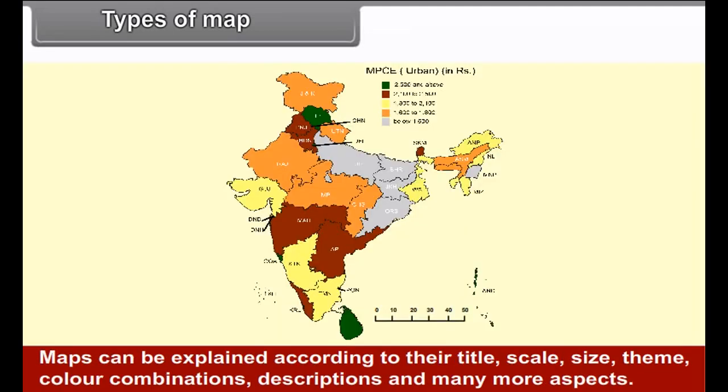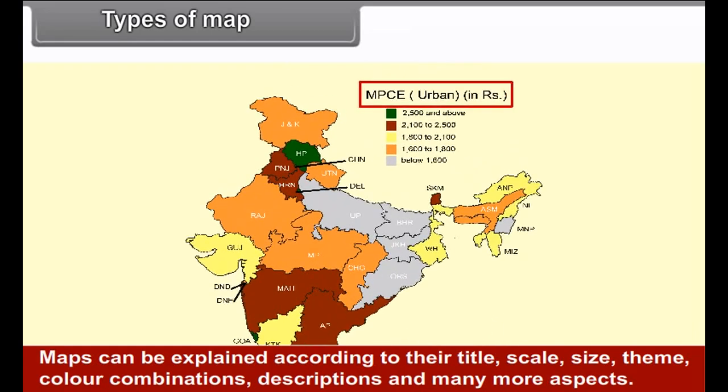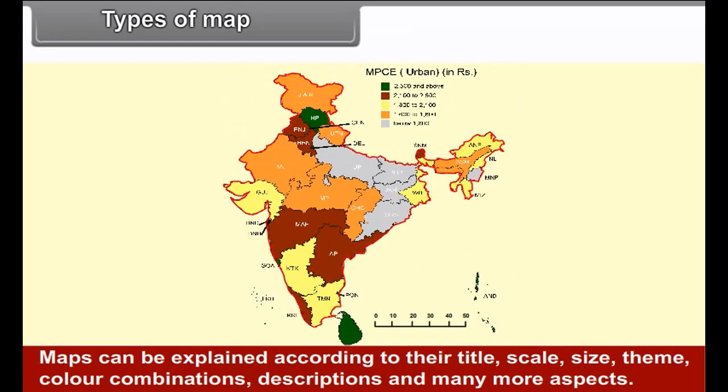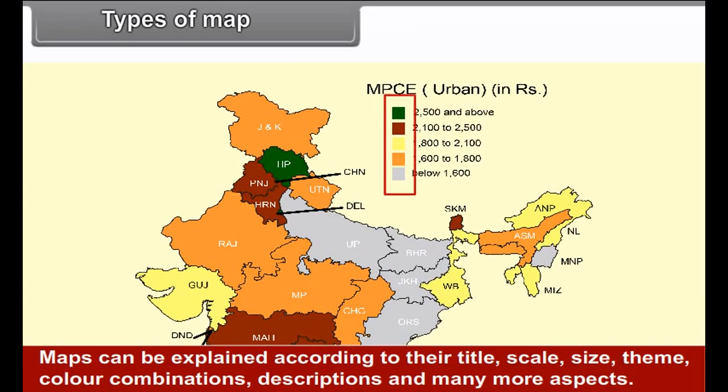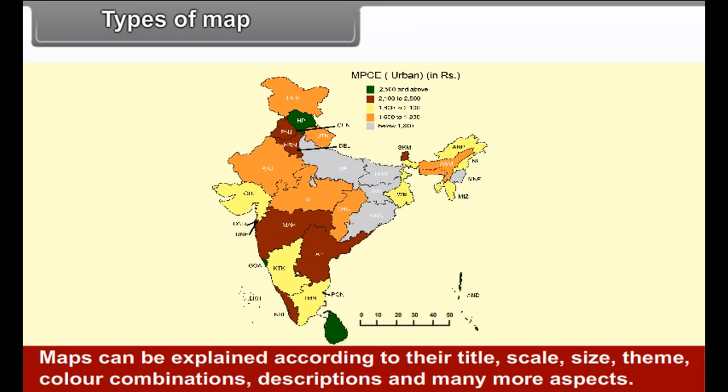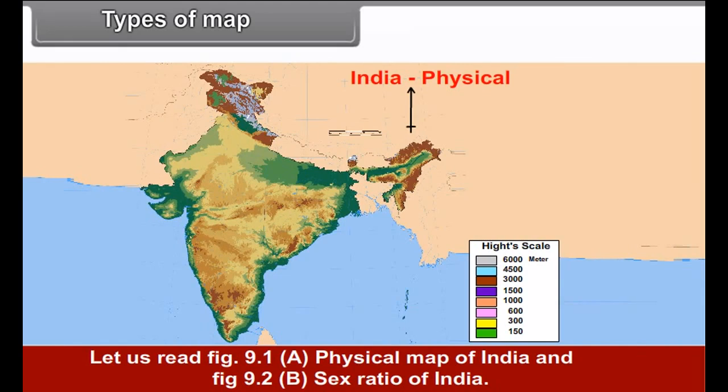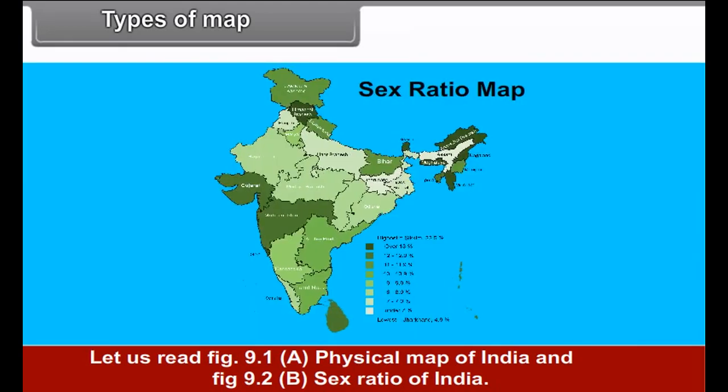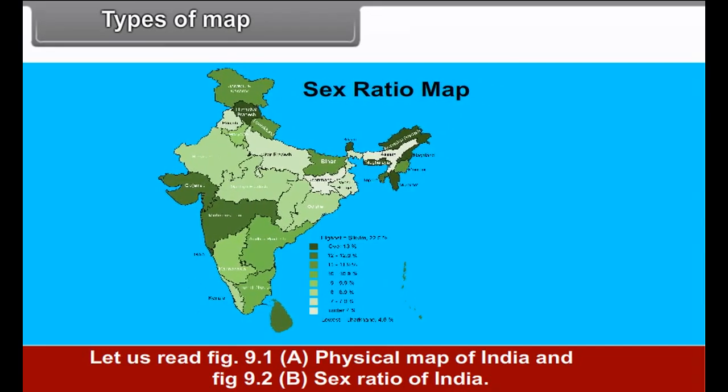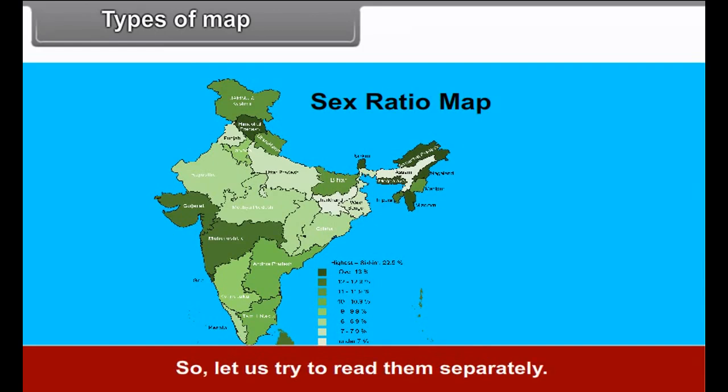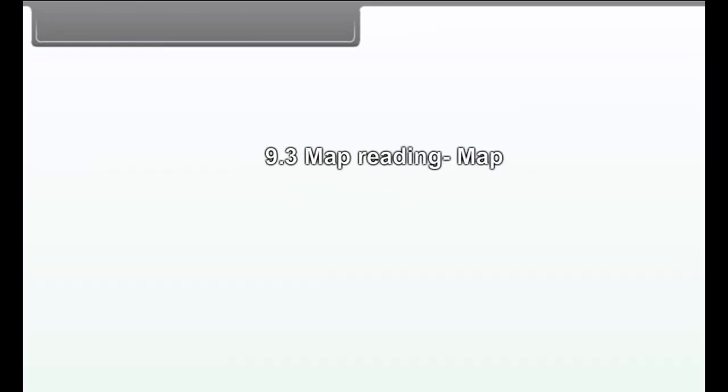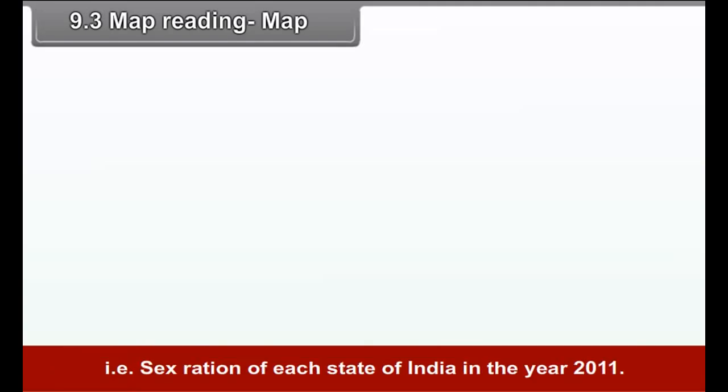9.3 Map Reading. In the previous class, you have learnt the types of maps. This year, let us learn to read, understand and explain them. Maps can be explained according to their title, scale, size, theme, colour combinations, descriptions and many more aspects. Let us read figure 9.1a, physical map of India and figure 9.2b, sex ratio of India. Both the maps are different. So, let us try to read them separately. For this, we have to take different aspects of maps as given below.